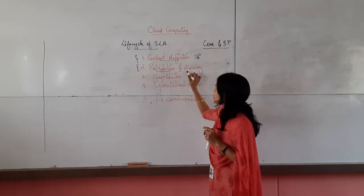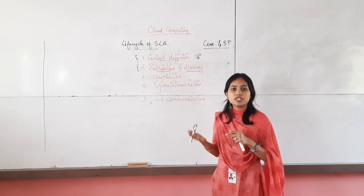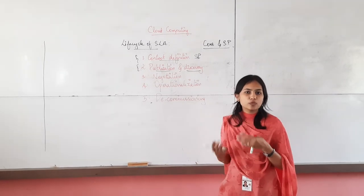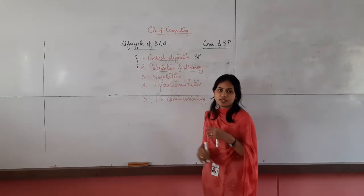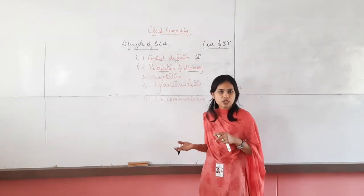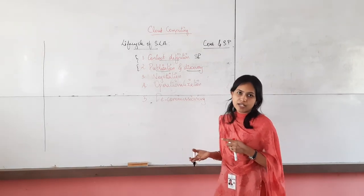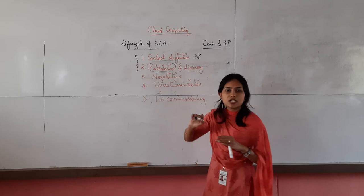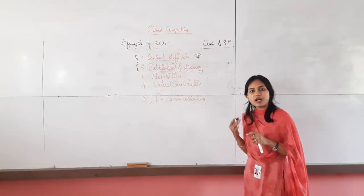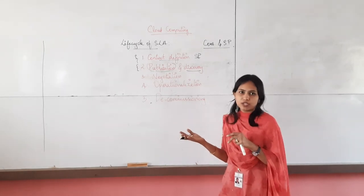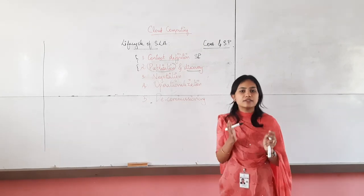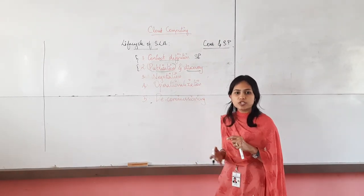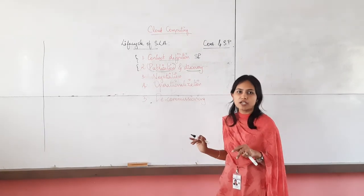The second phase is Publication and Discovery. First, publication — how can I reach the users? I need to publish my service. Publication means the service provider needs to publish or advertise that particular service to the outside world. You can publish on any kind of social media, advertise in a newspaper, or use any kind of media. So the outside users can understand that this service is available and they can reach you.